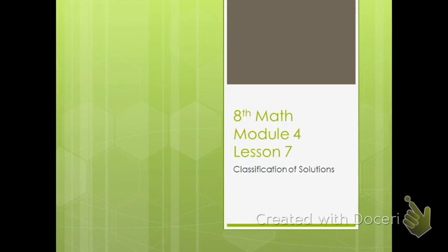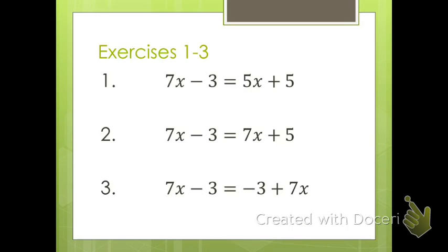Welcome to Lesson 7 of Module 4. This is called Classification of Solutions, and we're talking about solutions to linear equations. We have found that sometimes there is one solution — we find it by using properties of equality and getting the equation in the form x equals some constant. But then in earlier lessons, sometimes the equation, when we went through the steps of solving it, came out with something untrue, and we talked about the fact that there was no solution. So we're going to talk about how we can more readily classify what type of solution a linear equation is going to have.